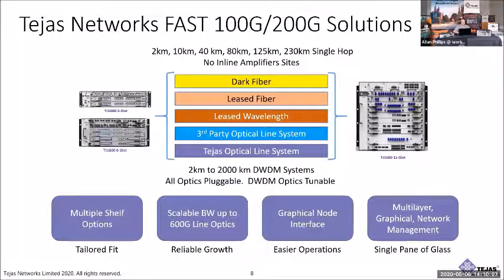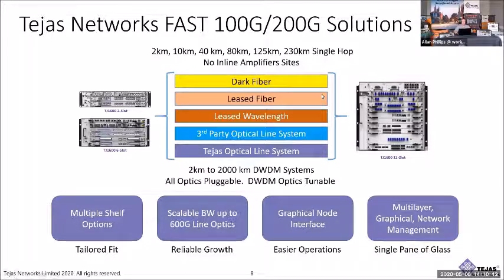The Tejas Network's fast 100 gig and 200 gig solutions come in three shelf sizes: a two-slot shelf at two rack units tall, a six-slot shelf at four rack units tall, and an 11-slot shelf at nine rack units tall. Very compact form factors that can be easily slid into existing network structures and existing bays. These systems can go over dark fiber, leased fiber, or leased wavelength. Today we're talking about it going over a third-party optical line system — using existing amplifiers, existing b-muxes — and just plugging in the wavelength from our 100 gig optic.